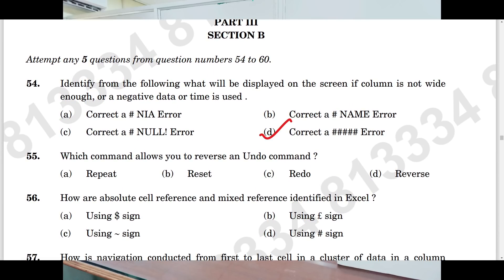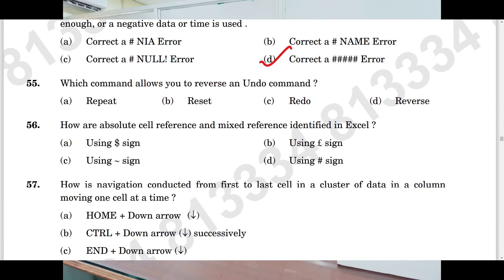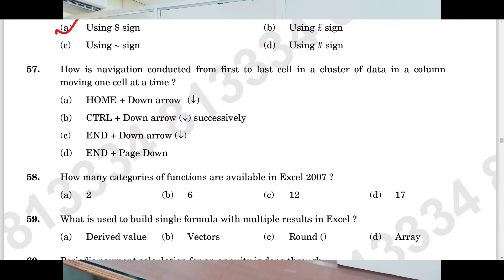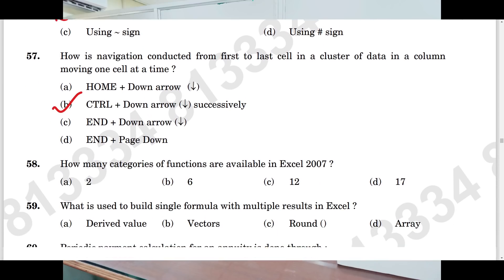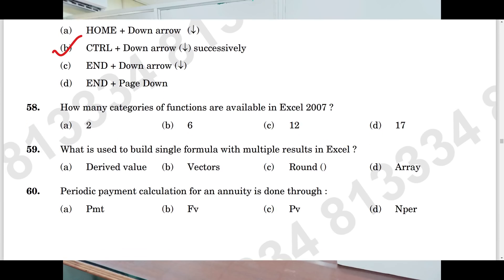Question number 55: C. Question number 56: A. Question number 57: B. Question number 58: C. Question number 59: D. Question number 60: A. So this is your answer key.